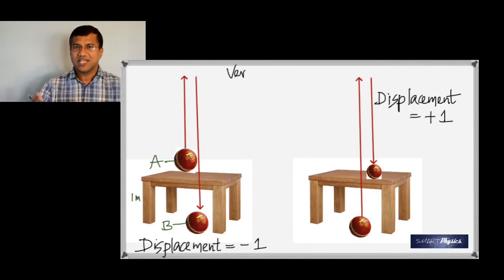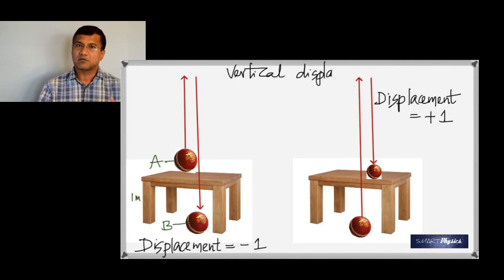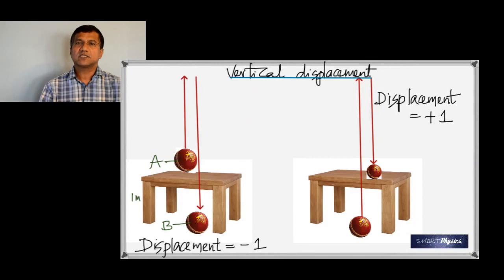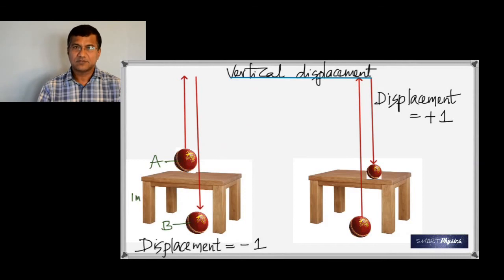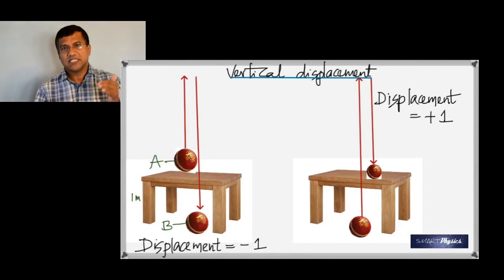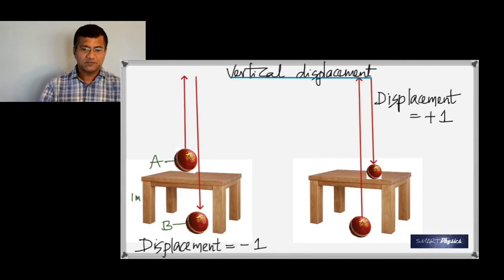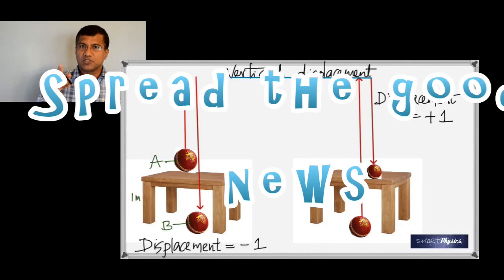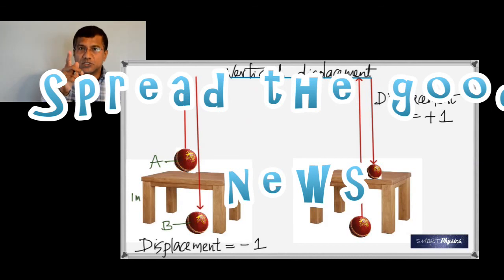To summarize: distance is a scalar and displacement is a vector, meaning it has direction. Correspondingly, speed is a scalar and velocity is a vector. That is the key difference between these quantities. Good luck — I hope you understand this.